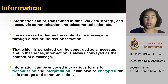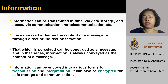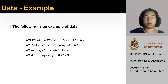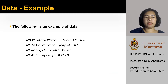Information can be encoded in various forms for transmission and interpretation. Also, it can be encrypted for safe storage and communication. So, let us consider another example. Here, you can see some data — some numeric values and some items like bottled water and air freshener.